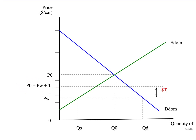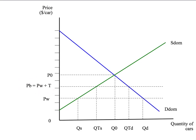Our new tariff-distorted price that we will pay for cars from overseas is given by PB, which is the world price plus the tax. This new higher tax-distorted world price is going to be the price that buyers in Australia pay for cars. Given the tax-distorted world price, buyers will now buy fewer cars — they'll only want to buy QTD cars. So we're going to have a reduction in the number of cars sold in Australia, both domestically produced and imported cars.